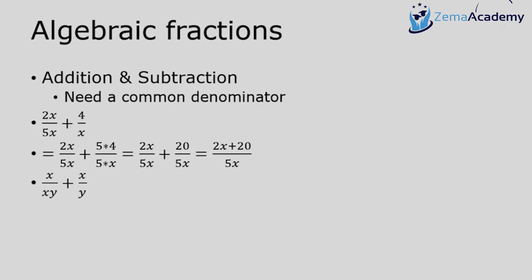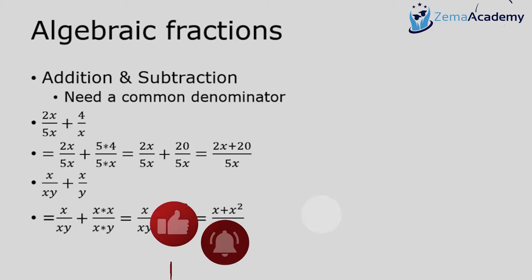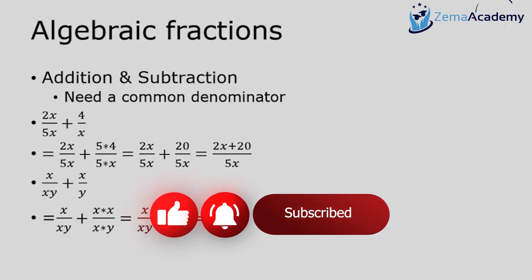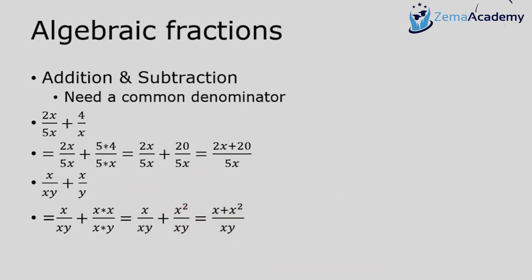Another example: x over xy plus x over y. Again, I can't proceed without a common denominator. I multiply the second fraction top and bottom by x — you must multiply both numerator and denominator by the same thing, otherwise the proportions change. Multiplying x over y by x over x gives x over xy plus x squared over xy, which equals x plus x squared all over xy.